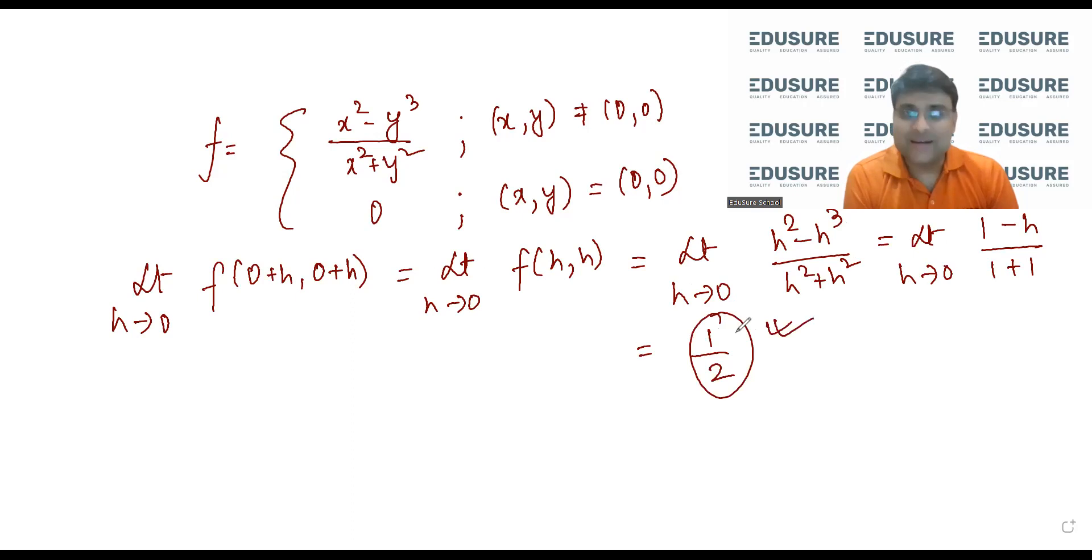Now right hand limit itself is 1 by 2. I don't have to check for the left hand limit because I know that the functional value is 0, so definitely the function is not continuous.